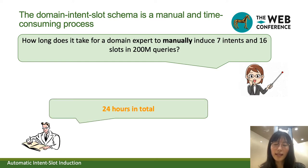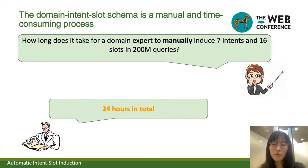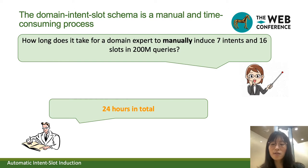The answer is surprising but real: 24 hours. Because the expert needs to go through the whole dataset and pick out the queries within a certain domain and summarize those huge numbers of queries. Due to the memory limits of humans, this process may need to go through again and again to ensure the integrity of the intent-slot schema.